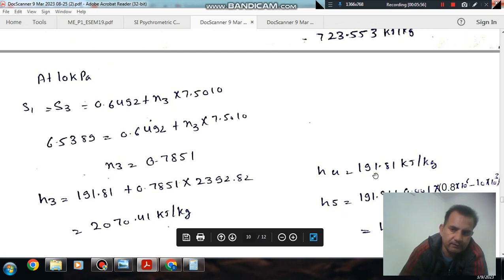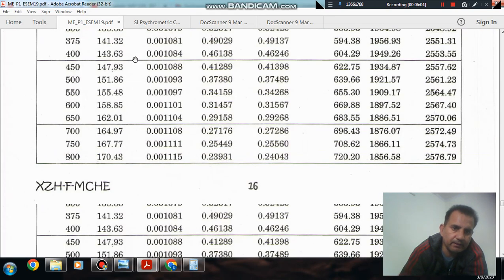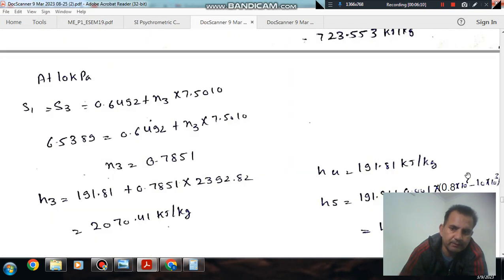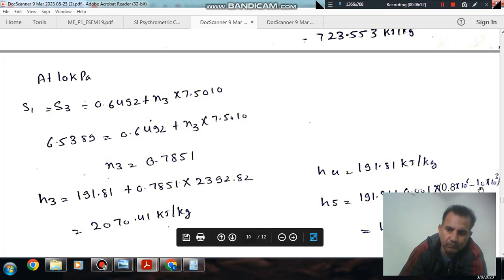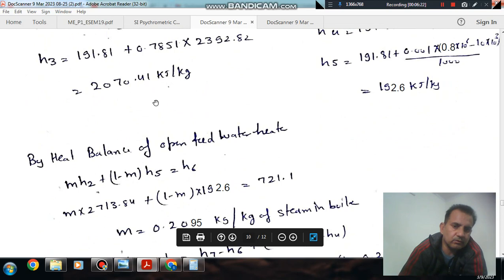And H5 is in a similar manner H4 plus pump work. The specific volume corresponding to 10 kPa is 0.00101 m³/kg. The pressure change is from 10 kPa to 0.8 MPa. Converting by 1000, it becomes 192.6 kJ/kg.